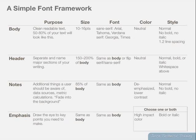The header separates and names major sections of your writing. Its size is based on the body — it should be 150 to 200% the size of the body. The font will be the same as the body, or we may flip across: if we're using a serif font for the body, we'll flip and use a popular sans-serif font, or vice versa. The color is neutral and the style may be bold or italics, or it can be normal. We want to make sure we have white space around that.